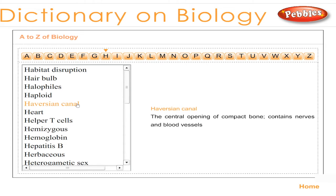Haversian canal: the central opening of compact bone; contains nerves and blood vessels.